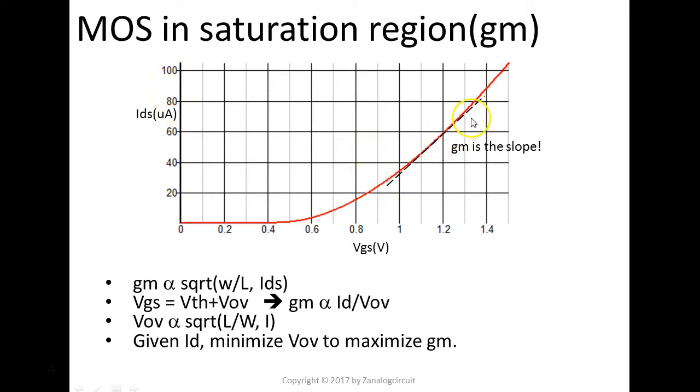Pick up any point here. The slope of that, we call it GM. GM essentially is the change in IDS over the change in VGS. So, you can go back to the Razavi book and take a look at exactly the full equation of how to describe the GM.